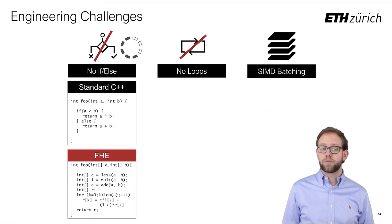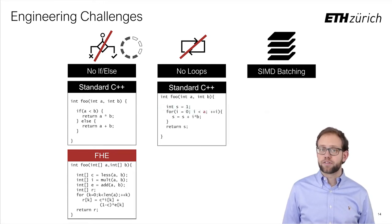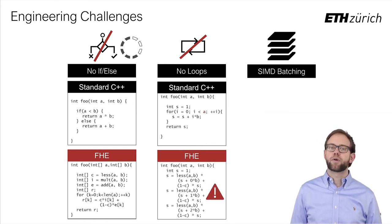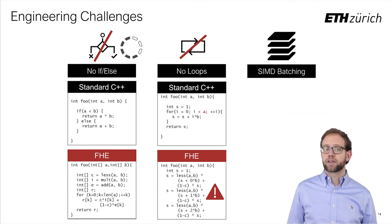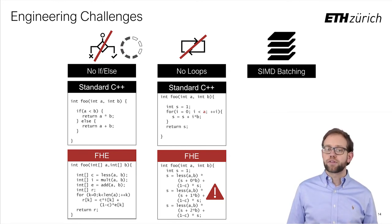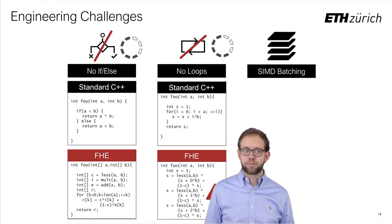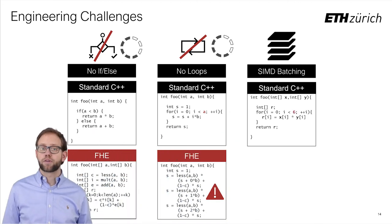Loops where the length depends on the secret input obviously run into similar issues. We can apply the multiplexing trick, but we have to evaluate the loop as many times as theoretically possible. The multiplicative depth of this kind of circuit quickly explodes, and therefore many schemes cannot perform any meaningful data-dependent looping in practice. While a few compilers support this kind of loop unrolling, the heavy performance penalty means that it's only really useful when there's a non-trivial upper bound on the loop length. However, all these restrictions only apply to loops that depend on a secret input — other loops can of course be trivially unrolled.